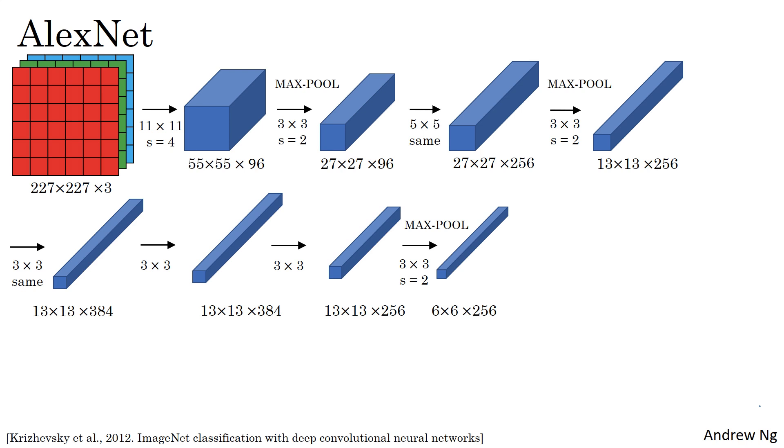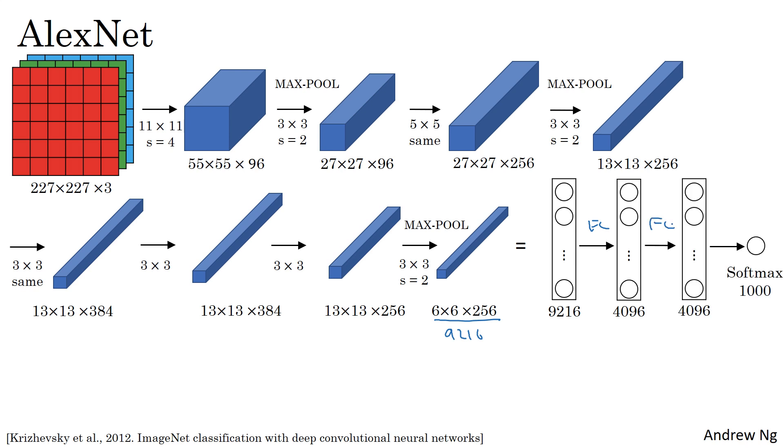If you multiply out these numbers, 6 times 6 times 256, that's 9216. We're going to unroll this into 9216 nodes. Then finally, it has a few fully connected layers. Then finally, it uses a softmax to output which one of 1,000 classes the object could be. This neural network actually had a lot of similarities to LeNet, but it was much bigger. Whereas LeNet-5 from the previous slide had about 60,000 parameters, this AlexNet had about 60 million parameters. The fact that it could take pretty similar basic building blocks but have a lot more hidden units and train it on a lot more data, it was trained on the ImageNet dataset that allowed it to have just remarkable performance.